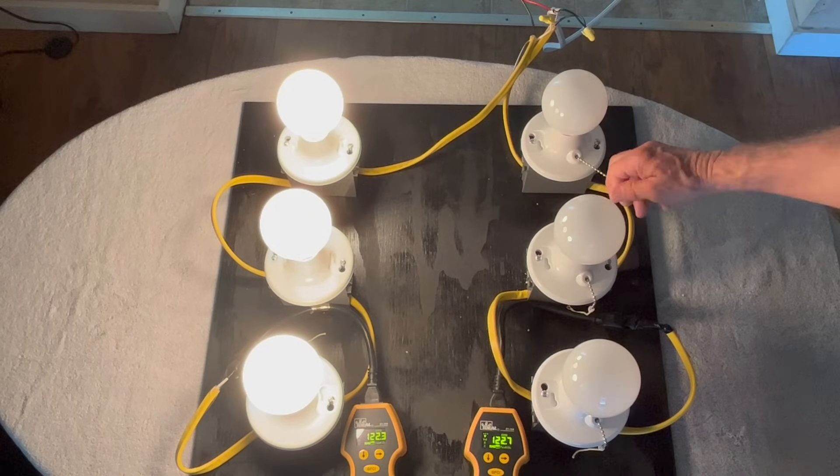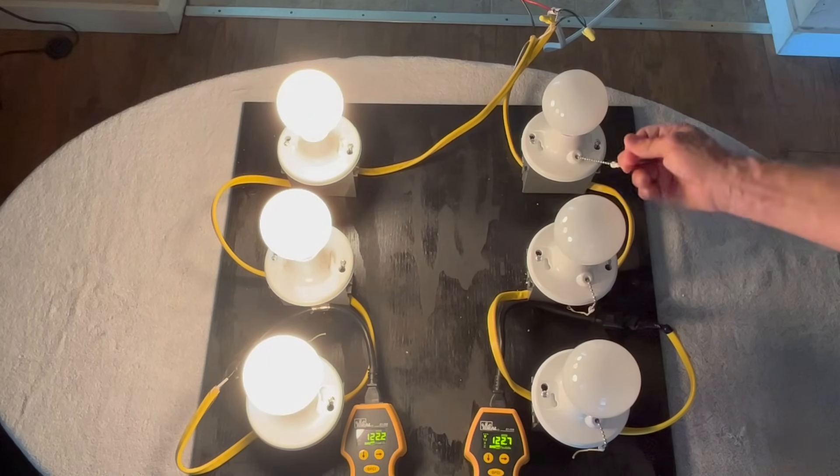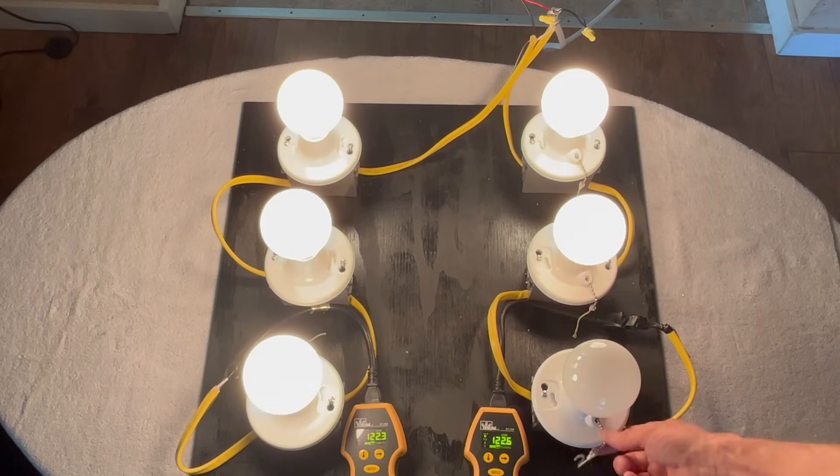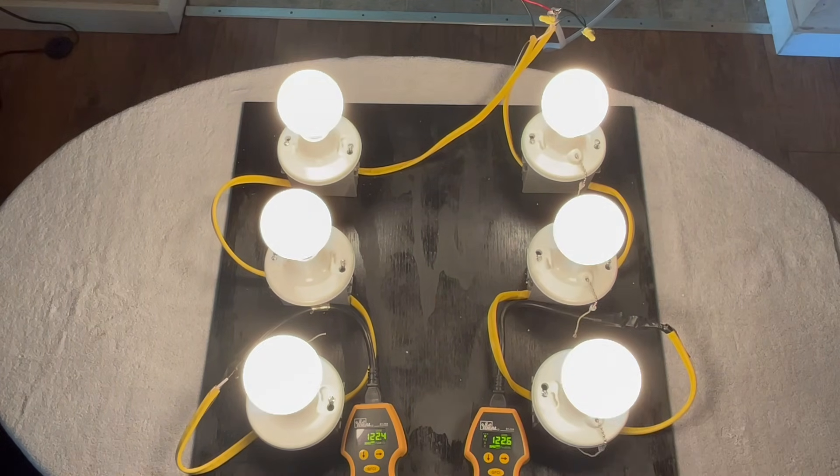Because the neutral wire acts as the anchor point of the electrical system, and because all the loads on each leg are in parallel with each other, the voltage remains constant at about 120 volts.